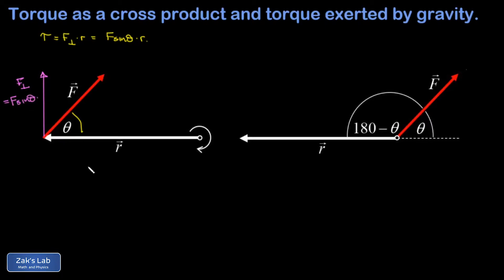We multiply by the length of the lever arm to find the magnitude of the torque exerted with respect to that rotation axis. The torque exerted here is clockwise. As we get into more serious applications, it's advantageous to formalize the definition of torque as a vector product called a cross product.